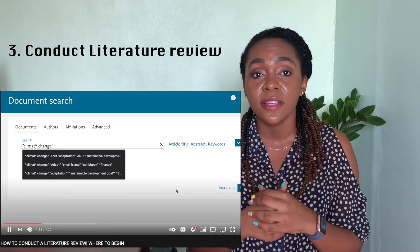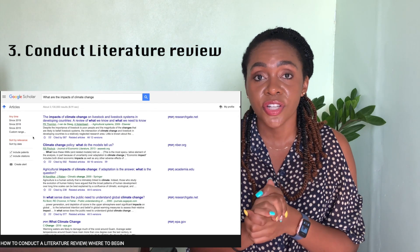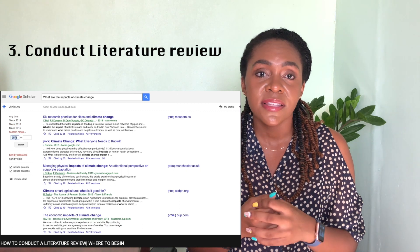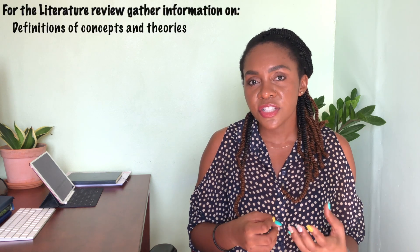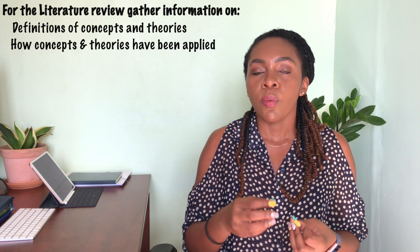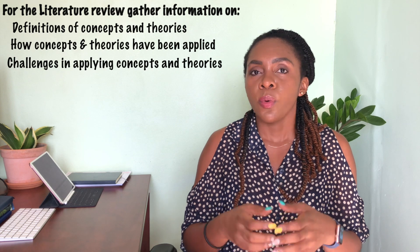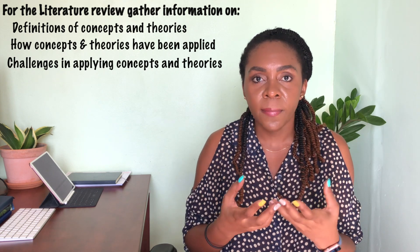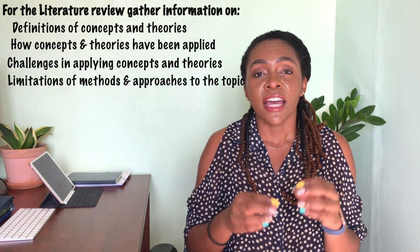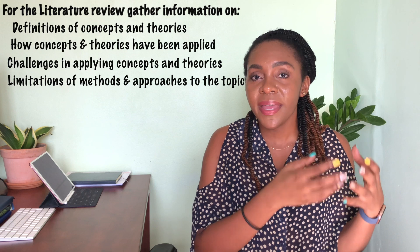Start looking into those concepts — understanding how they have been used, what the limitations are, and how you are going to use them. This is what we call the literature review. Your third step is to conduct the literature review: look for definitions of concepts, understand how they have been applied, identify the challenges associated with them, and note the limitations of different theories. Importantly, make notes of these points as you go along.